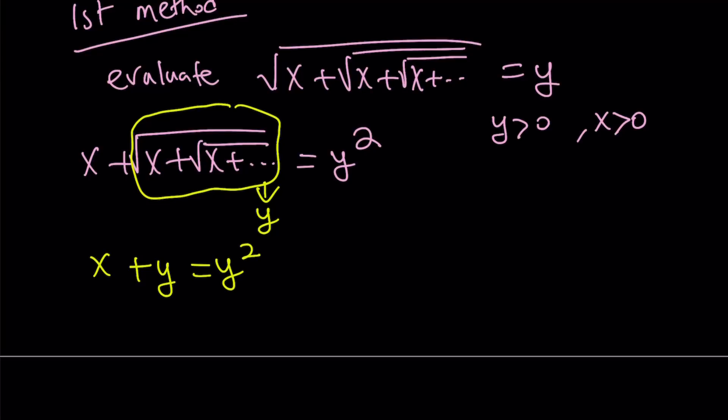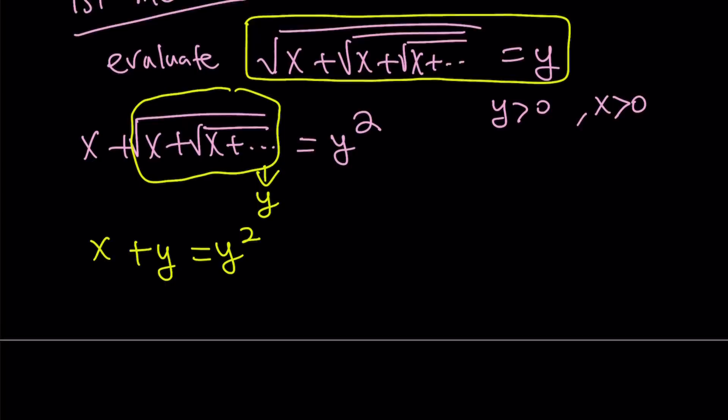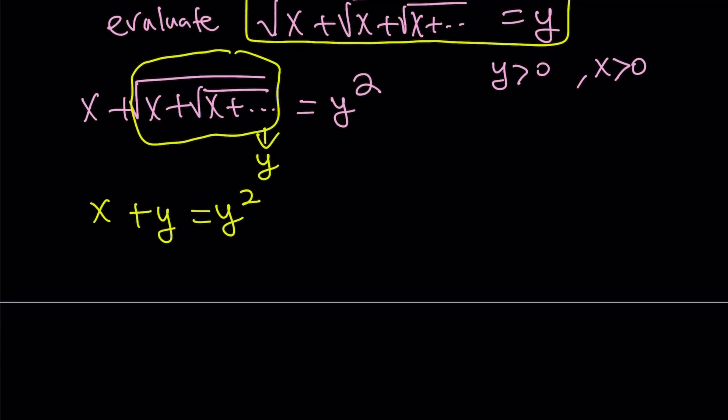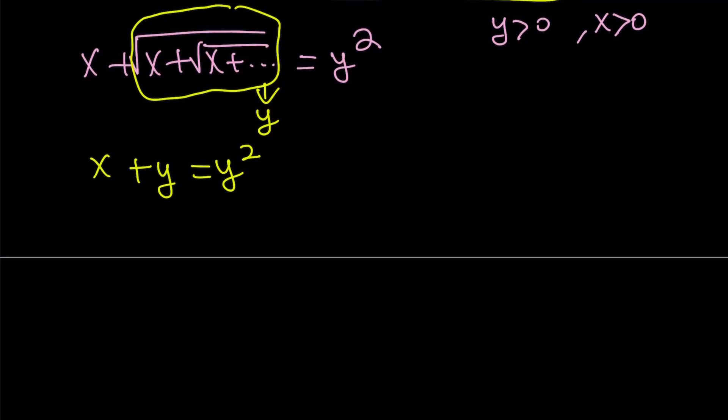Since our goal is to evaluate this expression, we're going to be solving for y. Let's put everything on the same side to make a quadratic: y squared minus y minus x equals zero.